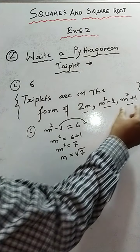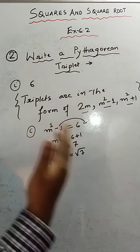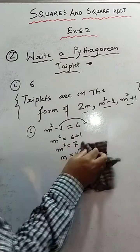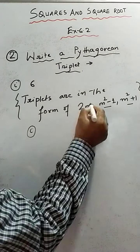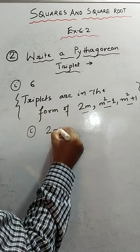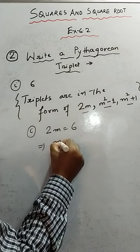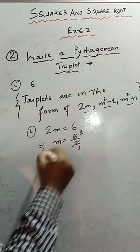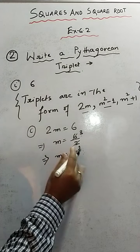The same problem occurs when comparing with m²+1 — again we won't get an integer. But when we compare the given value 6 with 2m, we get m = 6/2 = 3, which is an integer.